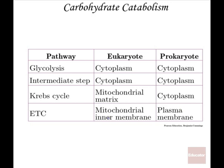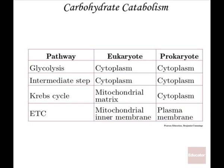In terms of carbohydrate catabolism comparing eukaryotic and prokaryotic cells: glycolysis occurs in the cytoplasm of both cell types. The intermediate acetyl coenzyme A step also occurs in the cytoplasm of both. The Krebs or citric acid cycle occurs in the mitochondria of eukaryotic cells but occurs in the cytoplasm of prokaryotes. The electron transport chain occurs in the mitochondrial inner membrane of eukaryotes, but in the plasma membrane of prokaryotic cells.